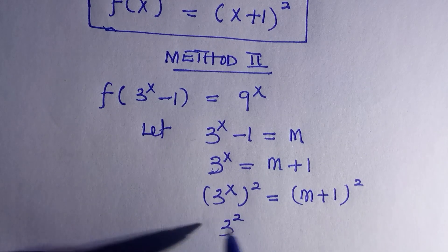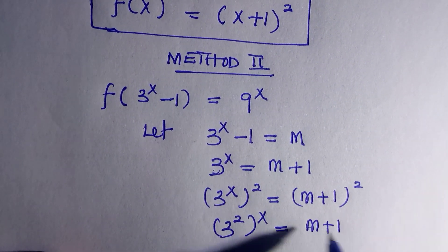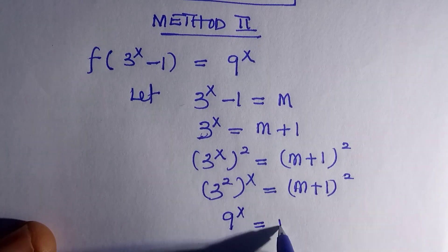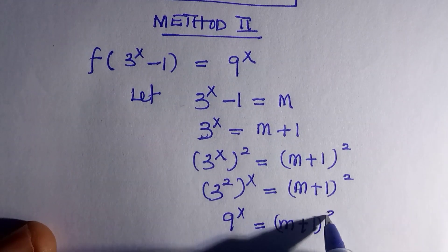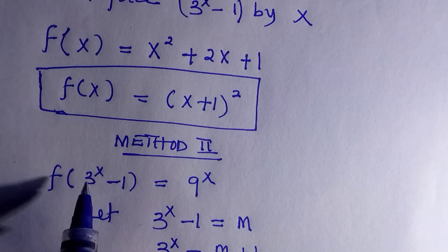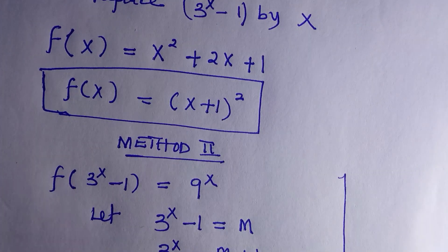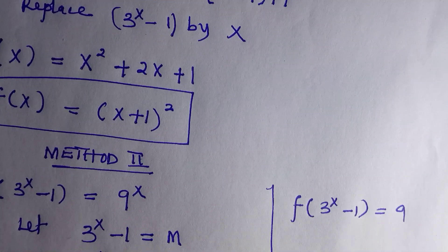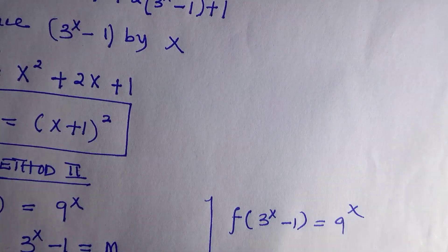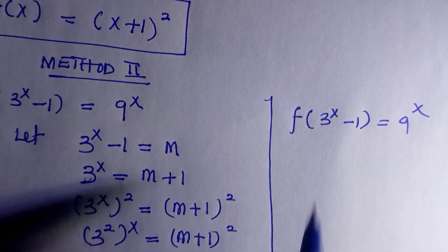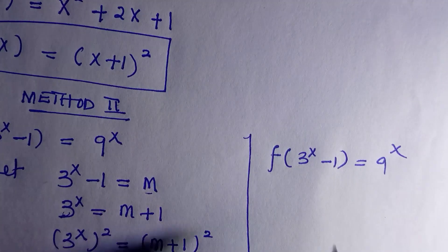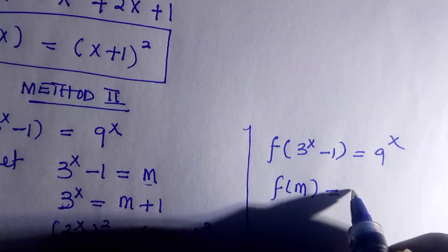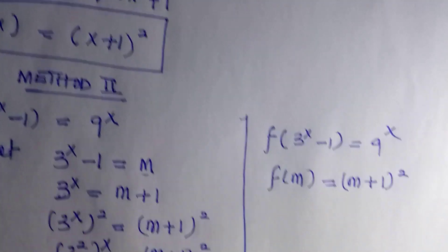Since 3 raised to the power of 2 is 9, we get 9 to the power of x equals m plus 1, all raised to the power of 2. Recalling the original equation f of 3^(x−1) equals 9^x, and making 9^x the subject, we replace it. Since 3^(x−1) is known as m, replacing gives: f of m equals m plus 1, all raised to the power of 2.